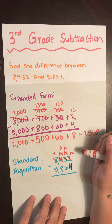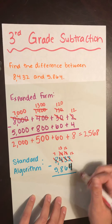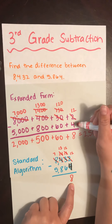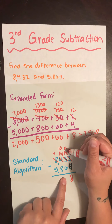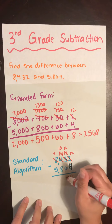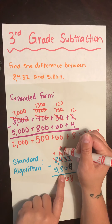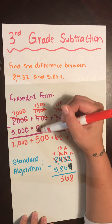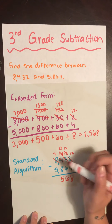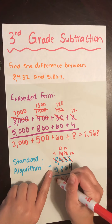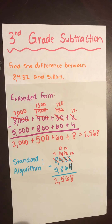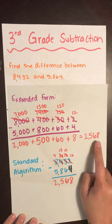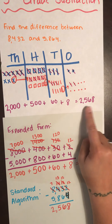So now we can subtract. 12 minus 4 is 8 — we can count that on our fingers if we need to, and we already did that up here. 12 minus 6 — we know our doubles — so 12 minus 6 is 6. 13 minus 8 is 5 — we did that up here too, 13 minus 8 was 500. And finally, 7 minus 5 is 2. And once again, we got an answer of 2,568.